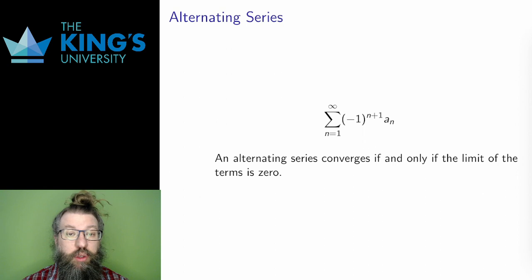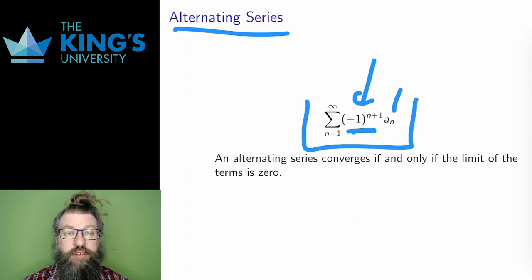The first technique applies only to alternating series. Recall that an alternating series is a series where the sign, the positive or negative, alternates for every term. I can write it this way, where I assume that the numbers a_n are all positive, such that the (-1)^n gives the alternating sign.